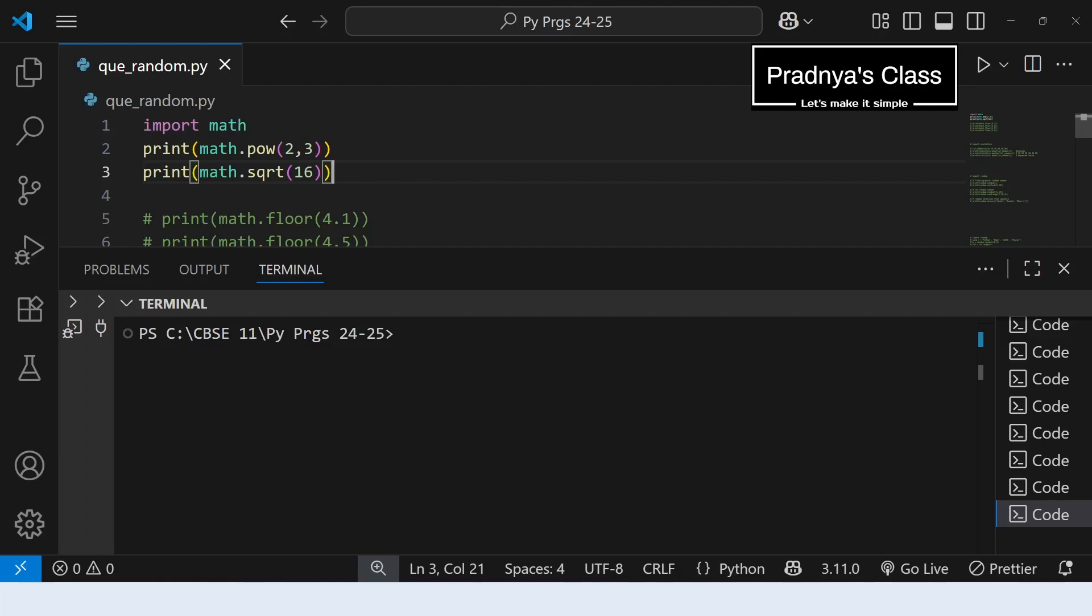There are trigonometry functions as well as logarithmic functions. And that is very easy to understand. There is nothing complicated about it. Alright we are in VS code and let's execute the power and square root function of the math module. Look at the output.